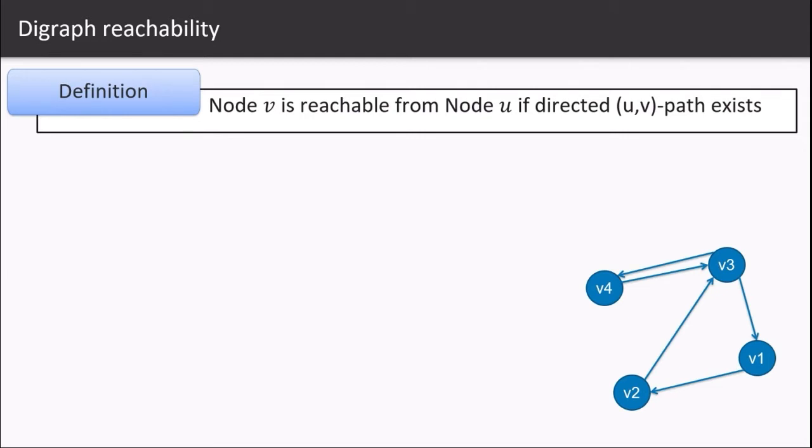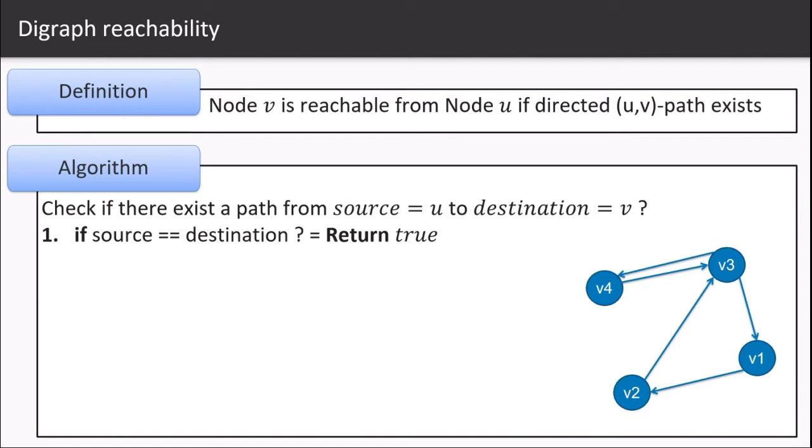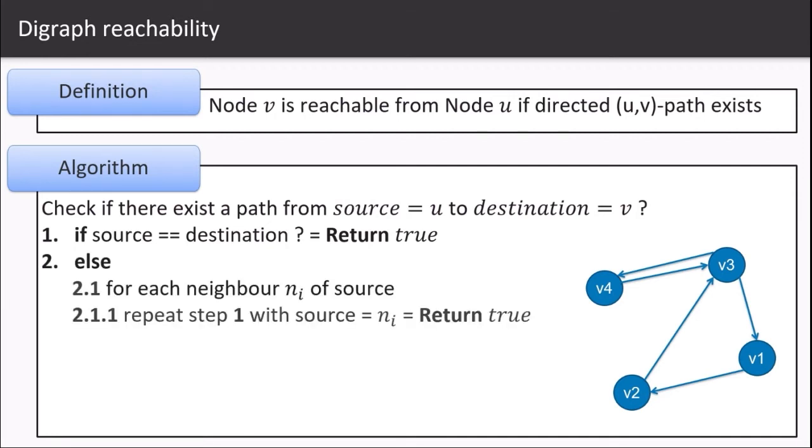Digraph reachability. A node v is reachable from node u if there exists a directed path from v to u. To find out that, we will follow a simple algorithm. First step, check if the source node is the destination node. If it is, return true, which means that the source node is already the destination node, so we already have a path. Else, for each neighbor n_i of the source node,